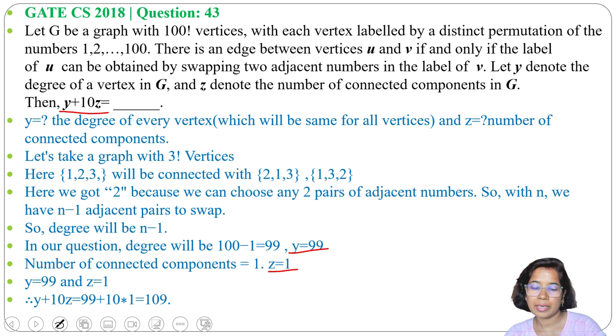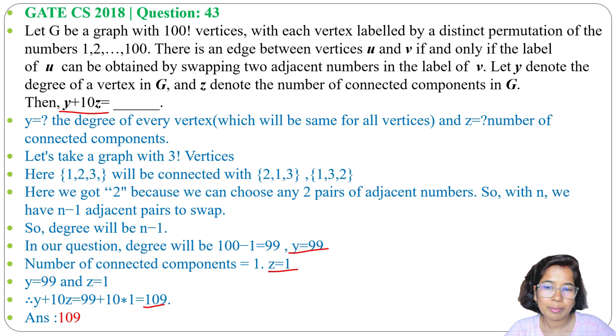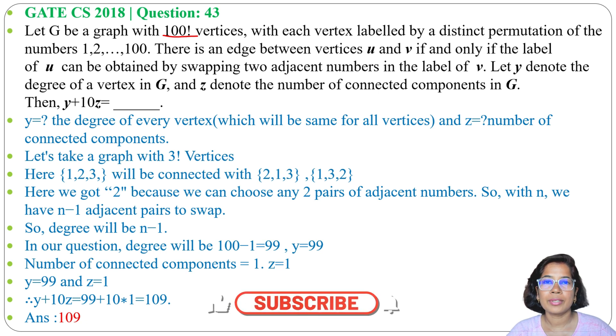It's 99 plus 10, which is 109. So here the answer is 109. This question is simple - just you need to identify what is y and what is the value of z. Then easily you can just put the value here and you will get the answer. Whenever there is a big number to understand the question, first solve with a small number. Here 100 is too big, right? So that's why I first solved with 3 numbers, then I got the idea, then I applied it to 100. So this is the trick for solving big numbers. I already discussed graph theory - just go through the lecture. And if this lecture is helpful for you, please like, share and subscribe. Thank you.